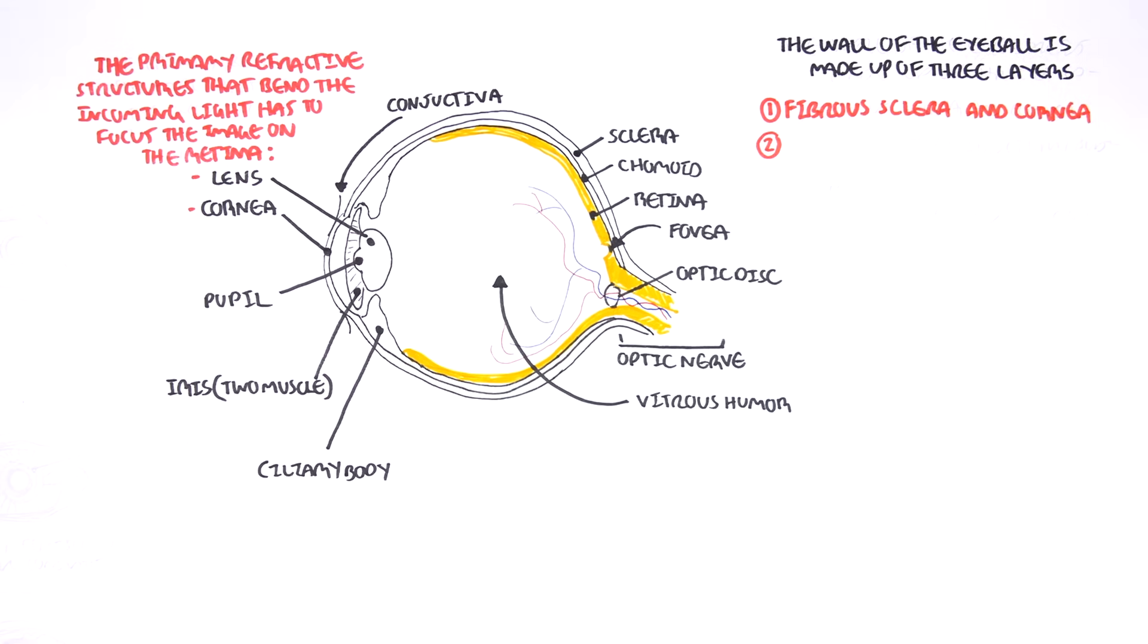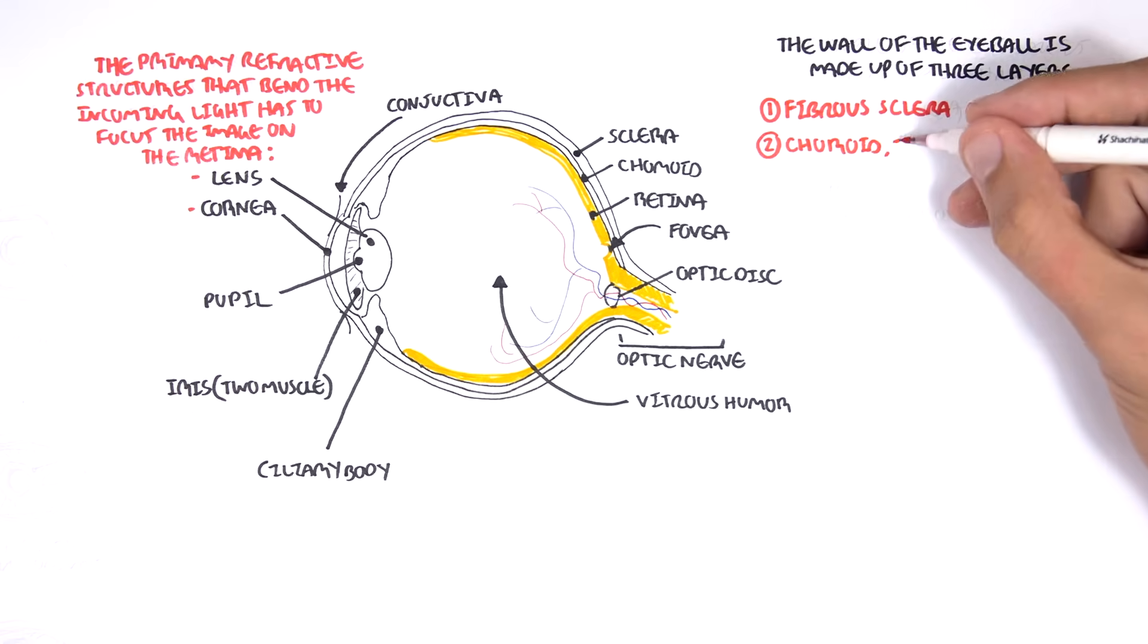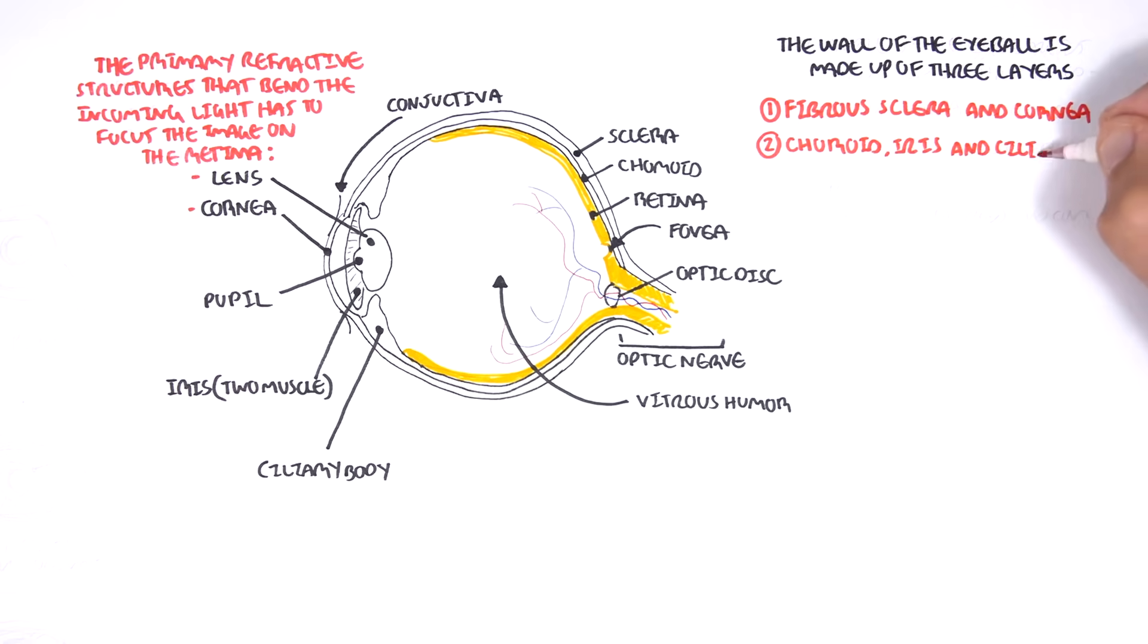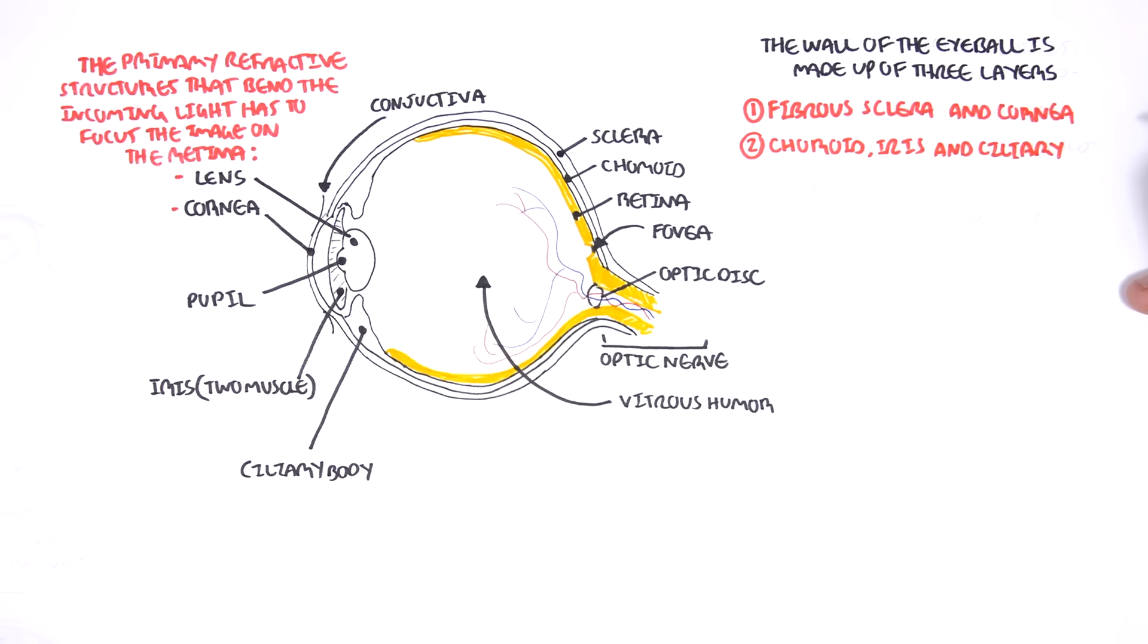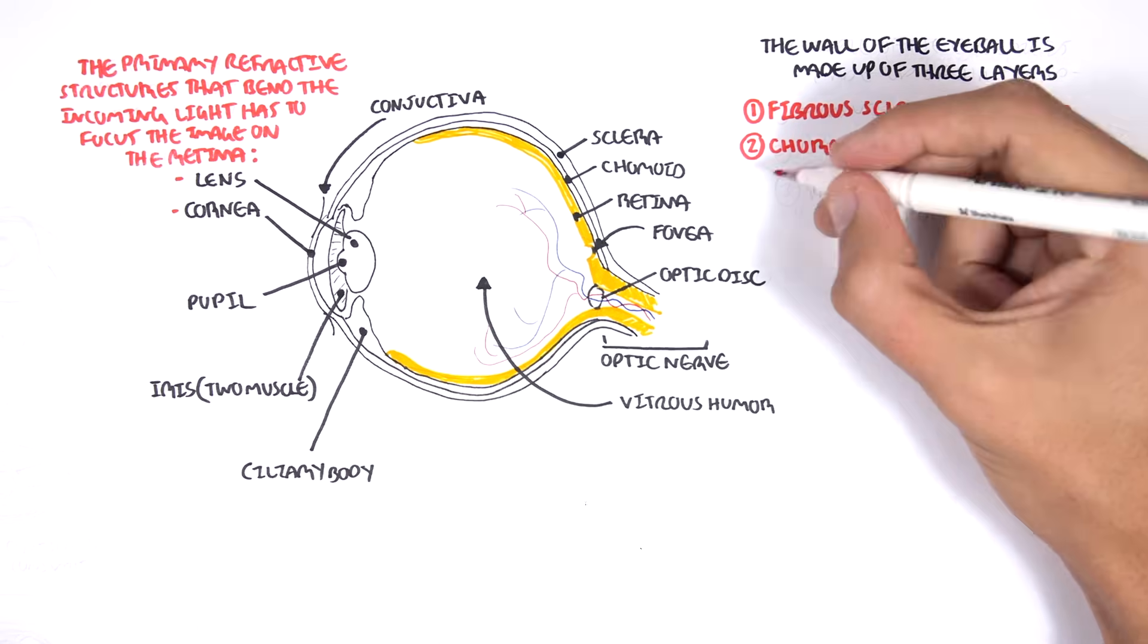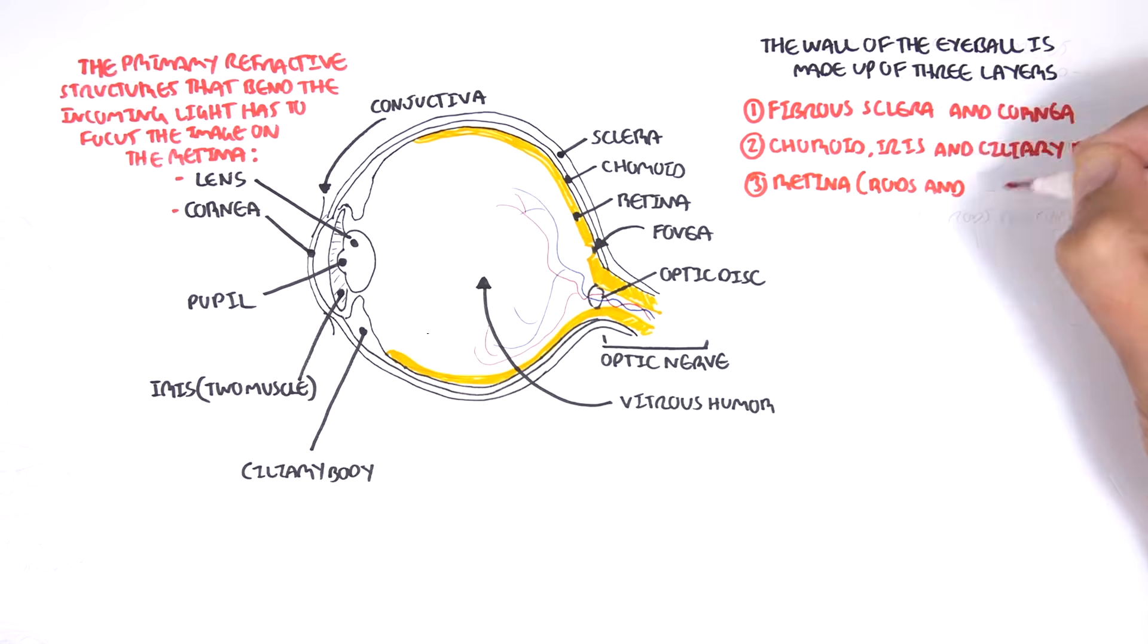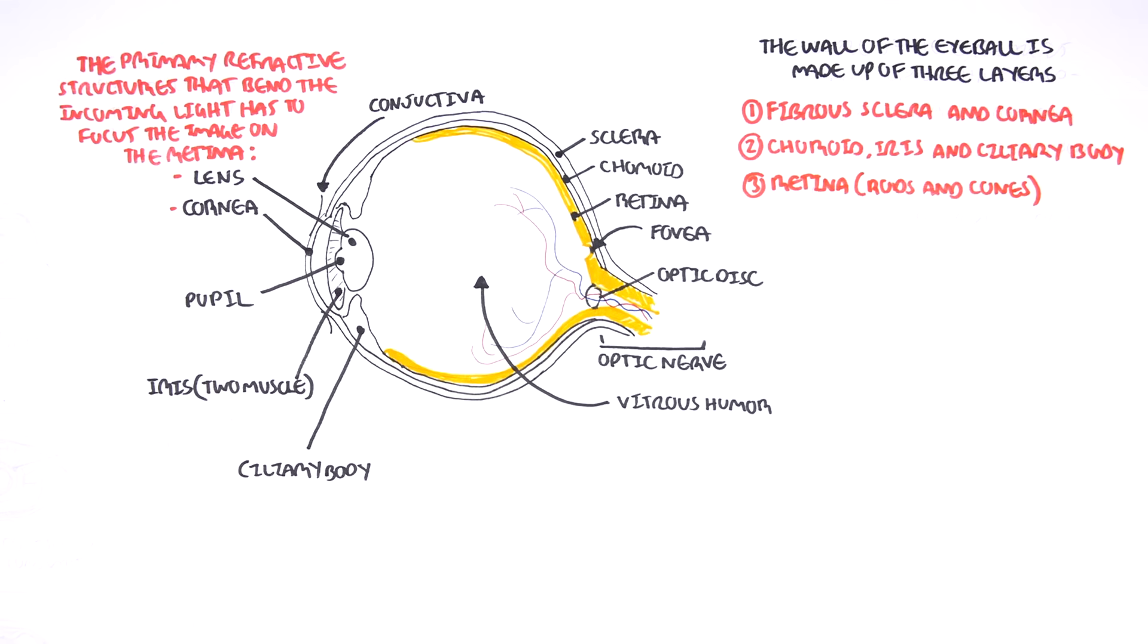The second layer is the choroid, the iris and the ciliary bodies, which make up the uvea. And then the third layer is the retina, which contains your photoreceptors, the rods and the cones.